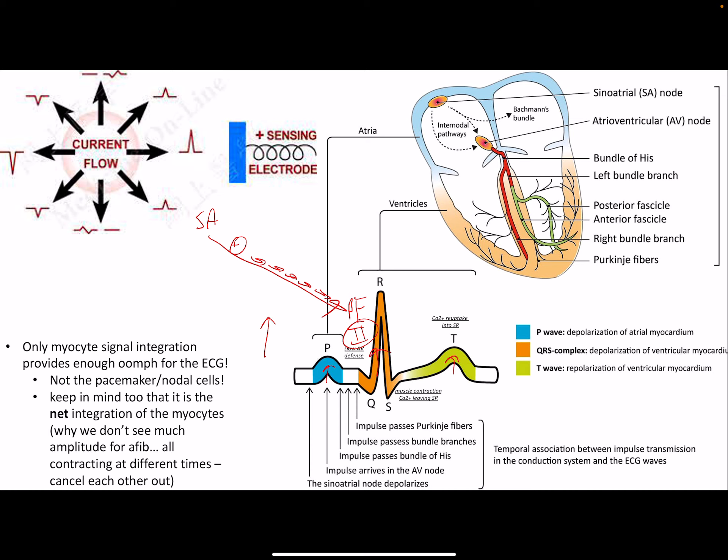On the other hand, if we look at aVR, that lead is over here and the current is traveling away from it, so in that case we should have a downward deflection. We'll see later that aVR and Lead II have amplitudes pointing in opposite directions.